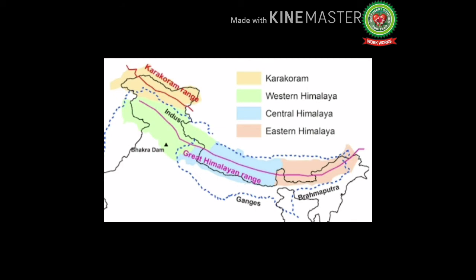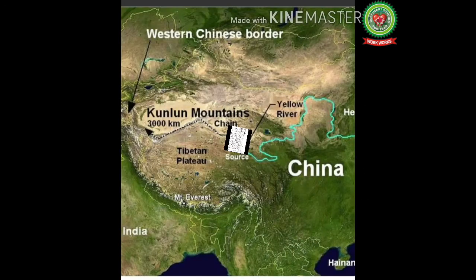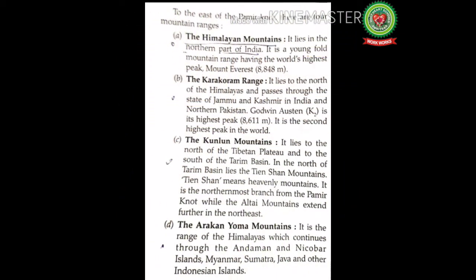The Kunlun mountains lie to the north of the Tibetan plateau and to the south of the Tarim Basin. To the north of the Tarim Basin lie the Tianshan mountains — 'Tianshan' means 'heavenly mountains.' It is the northernmost branch from the Pamir Knot, while the Altai mountains extend further to the northeast. The Arakan Yoma mountains are the range of the Himalayas continuing through the Andaman and Nicobar Islands, Myanmar, Sumatra, Java, and other Indonesian islands.